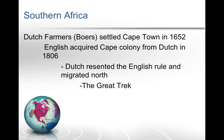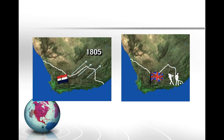The Boers were upset — they felt the English came in and swiped their territory and tried to change everything. So the Dutch farmers got up and migrated north from Cape Town in what is called the Great Trek of 1835. The British took control of Cape Colony while the Boers moved into territory to the north, which you can see on the map.